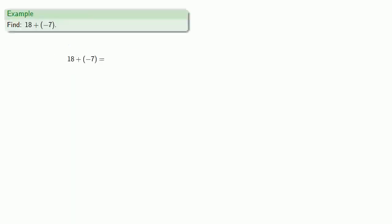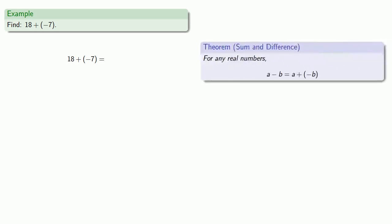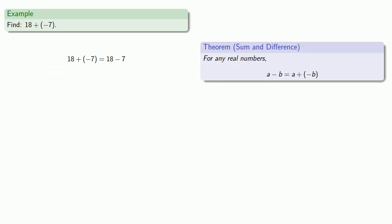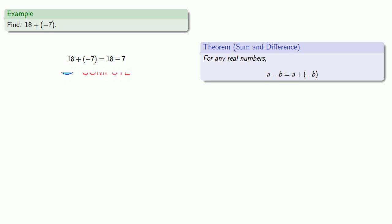So for example, if I want to find 18 plus the additive inverse of seven, that's the same as 18 minus seven, which is going to be 11.